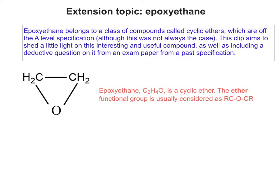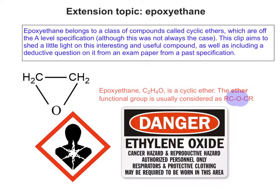It's a cyclic ether, and the ether functional group is usually considered as R-C-O-C-R. The actual ether functional group is normally the carbon-oxygen-carbon bond. Because of the tendency for the carbon-oxygen-carbon ring to pop open in chemical reactions, it's actually highly poisonous. It's a carcinogen, hence the carcinogenic internal damage hazard sign on the bottom left of the screen.